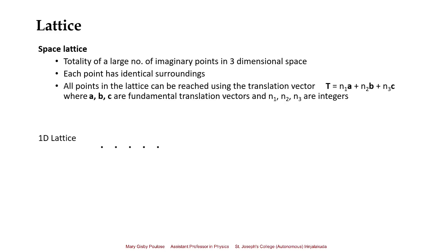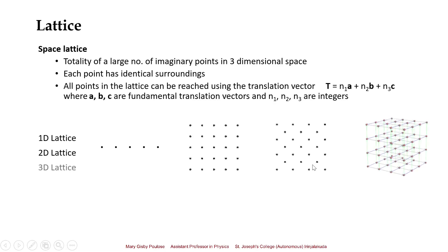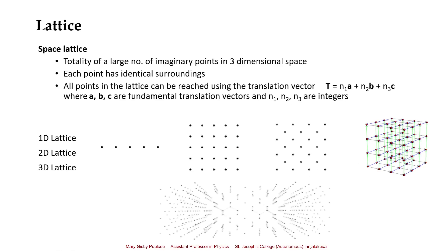A one-dimensional lattice is represented by points along one dimension. A two-dimensional lattice can be represented by an array of points along two dimensions, and there can be different types of two-dimensional lattices with repetitive distributions of points in different manners. A three-dimensional lattice is the distribution of points in three dimensions. In all these lattices, it is important to note that each lattice point has identical surroundings.